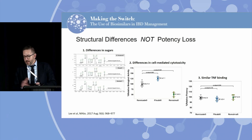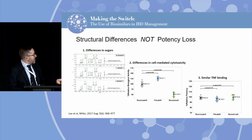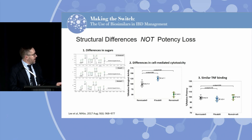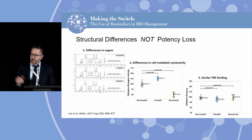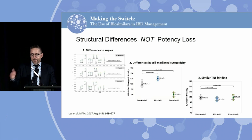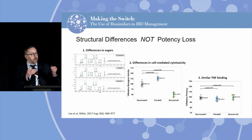Here's an example: a study looking at three biosimilars. On the far left, you can see differences in sugars between the three. Then differences in a cell assay between the three. And at the very end, differences in TNF binding. There are some differences in sugars and some differences in cell-mediated toxicity, but most importantly, for all three, even though there were slight differences in sugars and cell assays, binding to TNF — which is how the drug works — was identical across the board. So that reflects subtle cellular changes, but no impact on the overall effect of the drug.